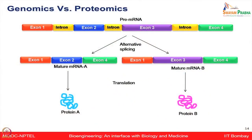Let us conceptualize the comparison of genome versus proteome. Going back to basics, looking at the pre-mRNA structure, there are different exons and introns. After the process of alternative splicing, the same pre-mRNA can give rise to two different types of mature mRNAs — mature mRNA A and mature mRNA B. Mature mRNA A has exons 1, 2, and 4; mature mRNA B has exons 1, 3, and 4.